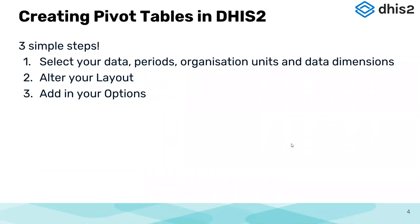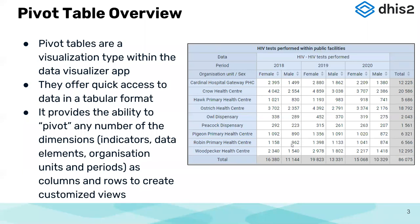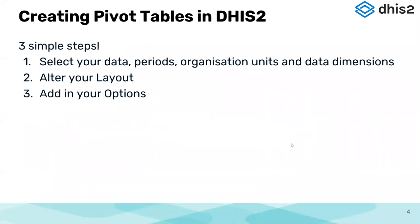Creating a pivot table is straightforward and requires just three steps. First, define or select your data dimensions — what, when, and where — plus any further dimensions such as the male and female disaggregation we saw. The second step is to manage the layout to ensure data is arranged in a way that is easy to interpret once presented. And of course, we also have the options section, which we'll be looking into to see what's available there.